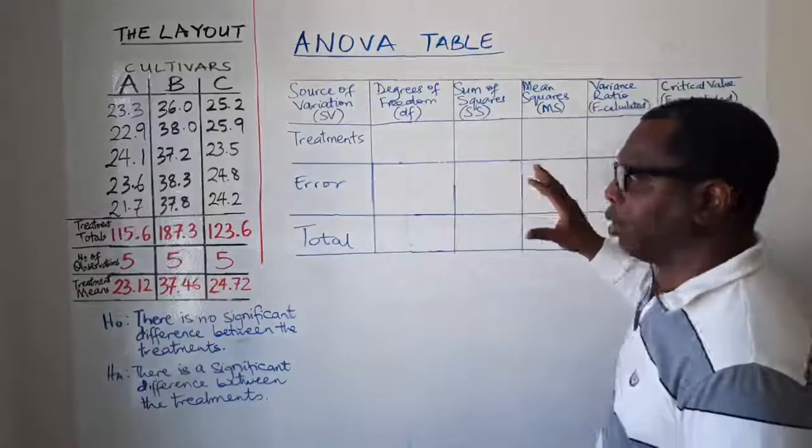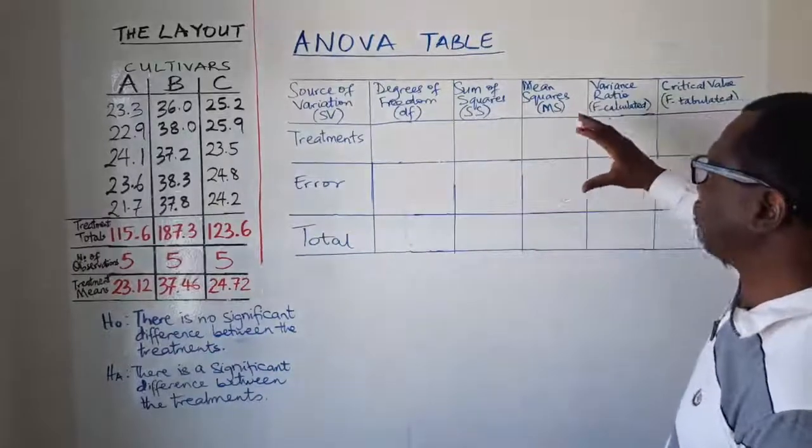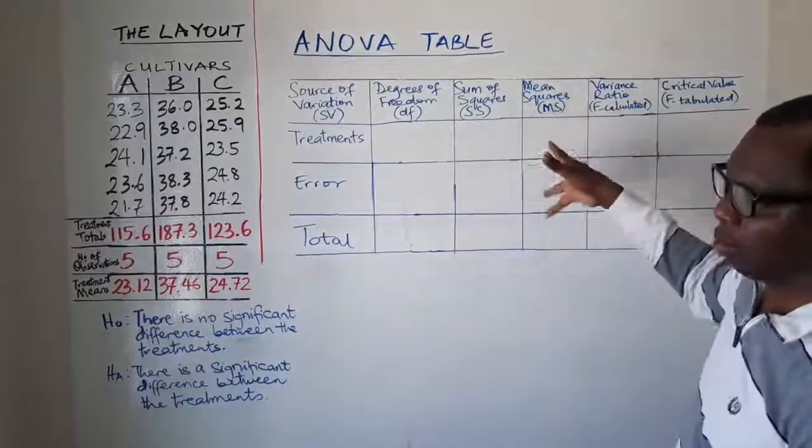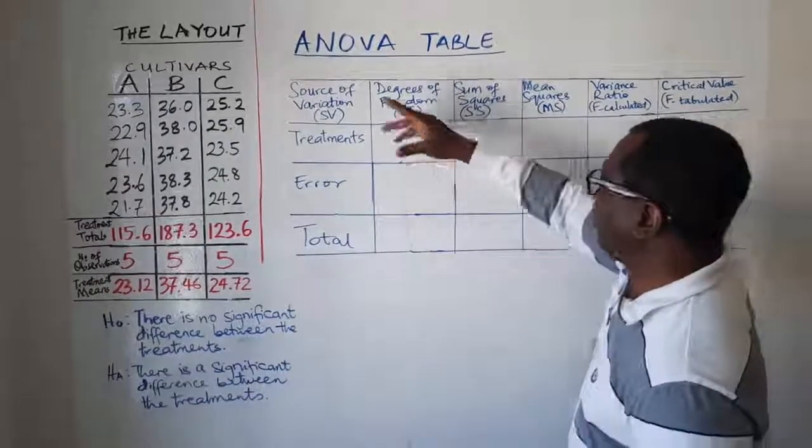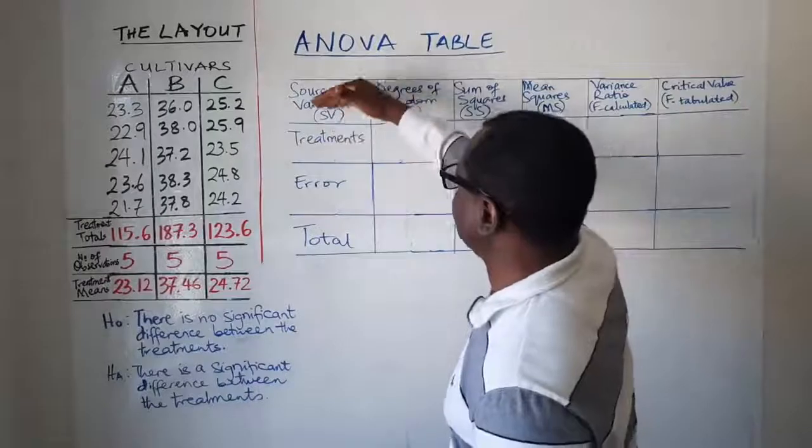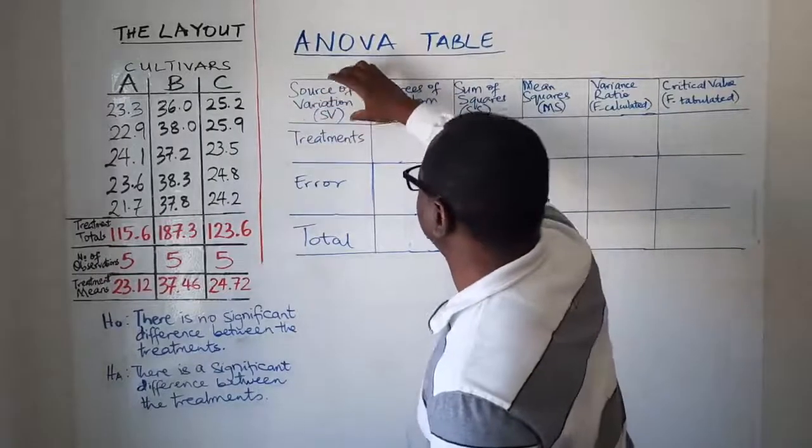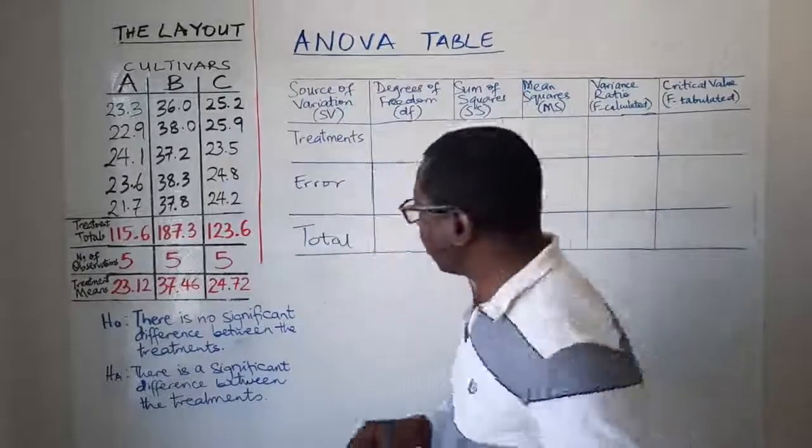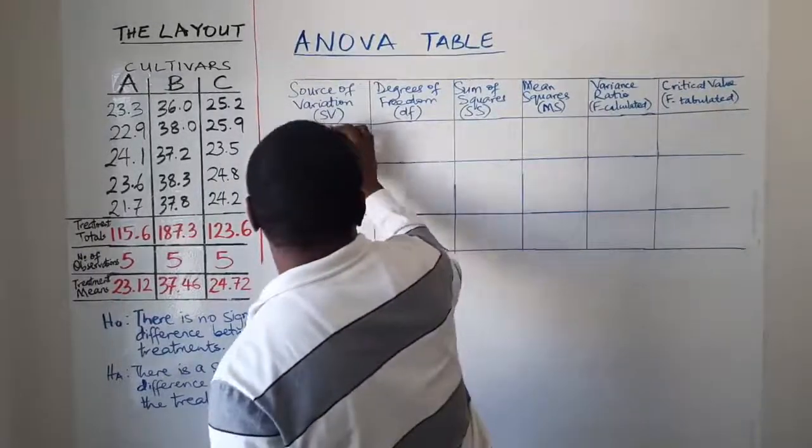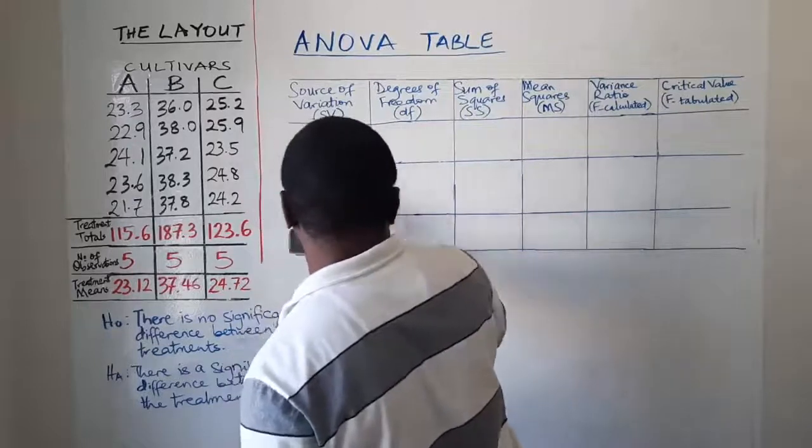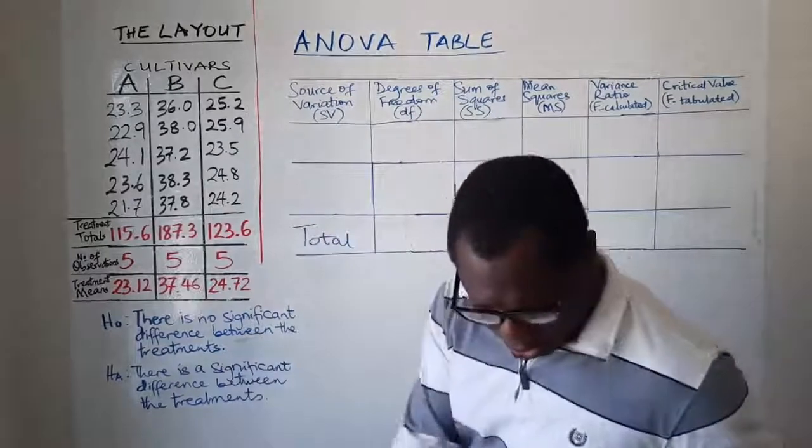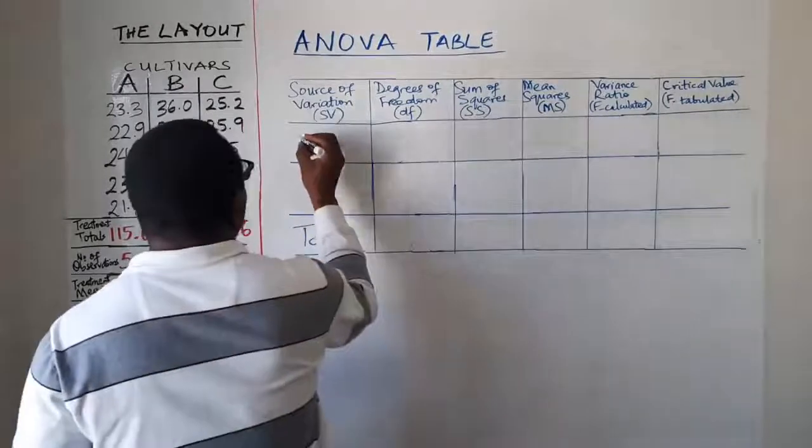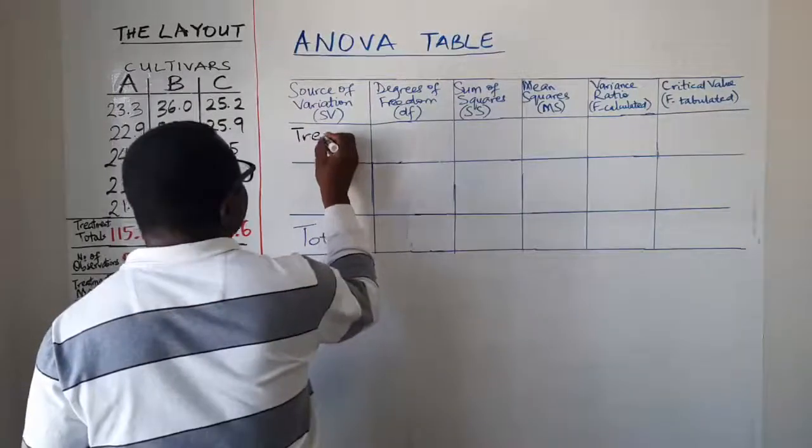So here on the board is what the ANOVA table is. It has rows and columns. The first column there is the source of variation, and permit me to use different colors for this so that you can understand. Yeah, so here the first thing you have